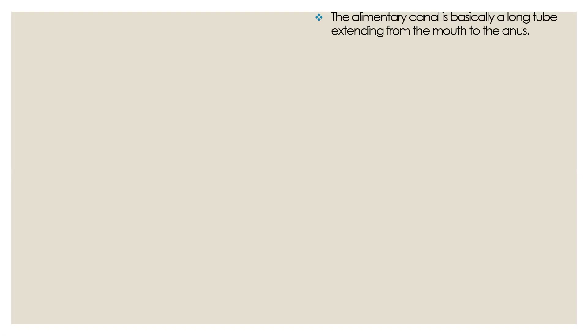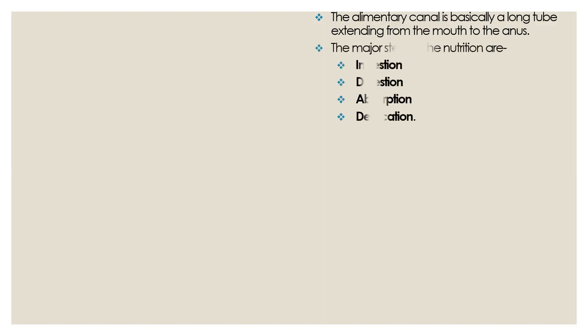Now we are going to discuss nutrition in human beings. Human beings are multicellular and have a well-developed organ system. Human beings also perform the holozoic mode of nutrition. In human beings, the holozoic mode of nutrition takes place in a long alimentary canal. The alimentary canal is a long tube-like structure extending from the mouth and ending at the anus. There are four major steps involved in nutrition: ingestion, digestion, absorption, and defecation.